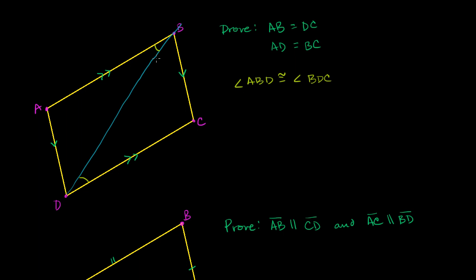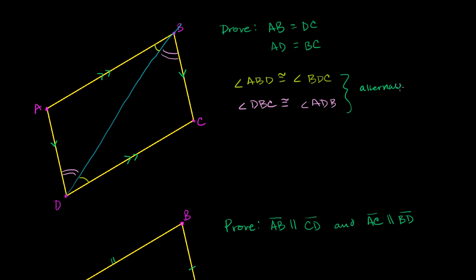You could also view diagonal DB as a transversal of the other pair of parallel lines, AD and BC. If you look at it that way, then angle DBC is going to be congruent to angle ADB for the exact same reason — they are alternate interior angles of a transversal intersecting two parallel lines.